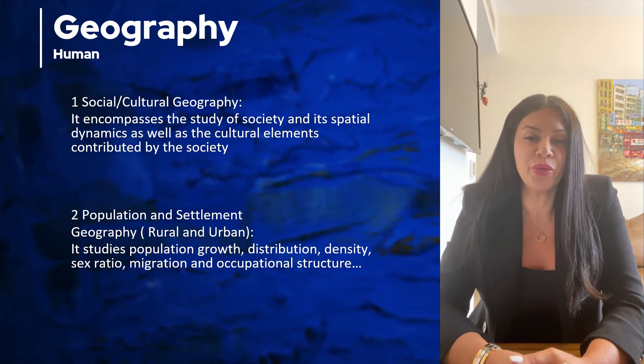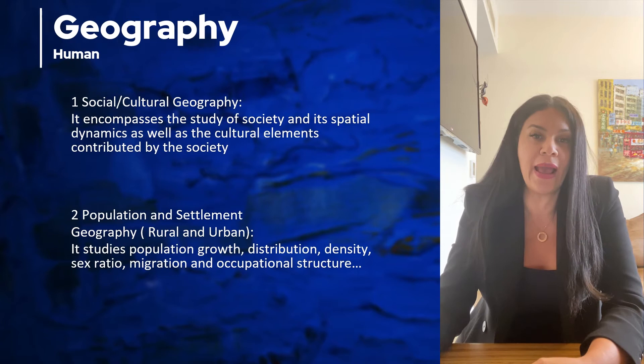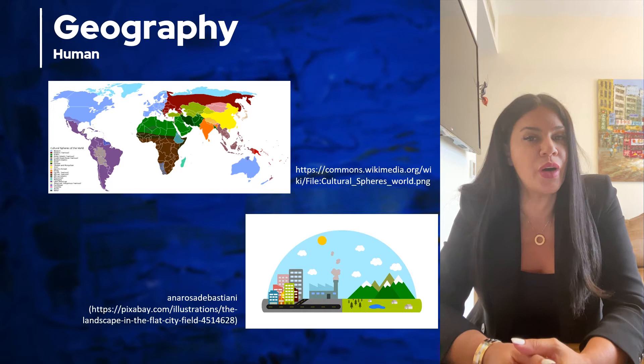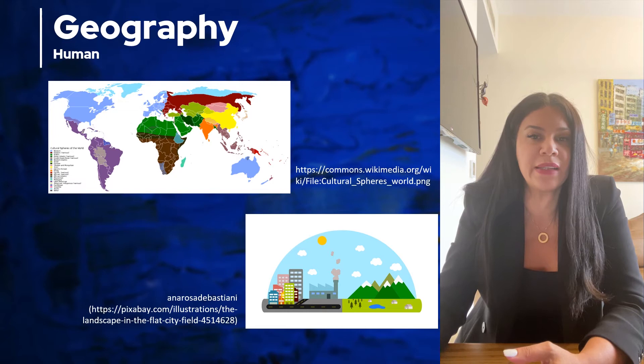The other sub-branch of human geography is population and settlement geography — rural and urban. As the name says, it deals with population numbers, like what is the population of a country, and what is the sex ratio of a country, which means the ratio of males to females in a population.